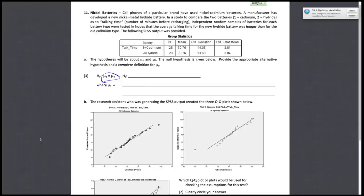So mu1, mu is essentially just the population mean. And 1 denotes the population of cadmium batteries and 2 denotes the population of hydride batteries, which you can figure out just by reading the problem. So mu1 is essentially just the population mean that only refers to cadmium batteries. So mu1 is equal to the population mean talking time for all cell phones with cadmium batteries.